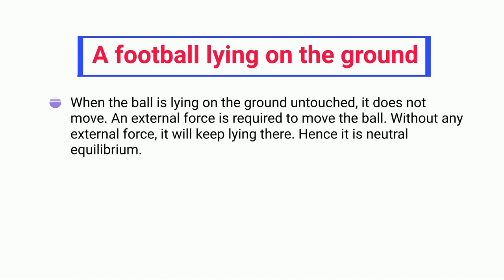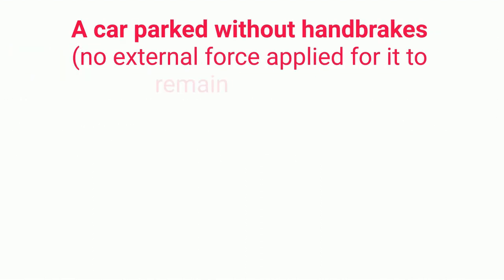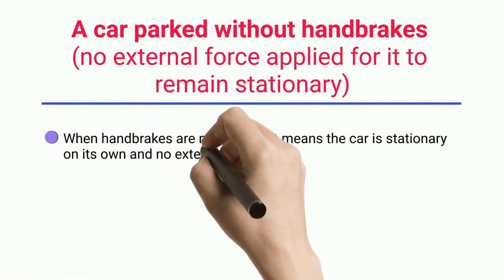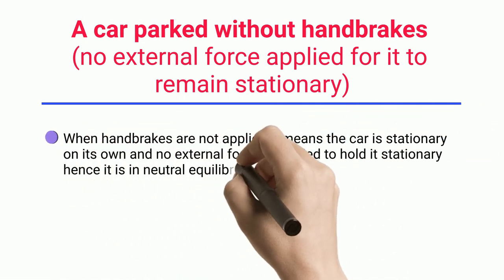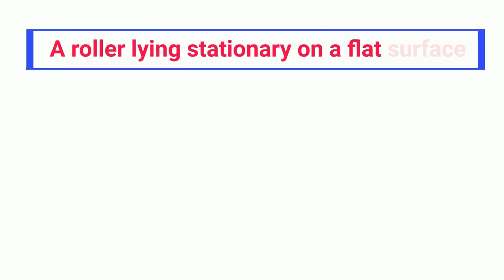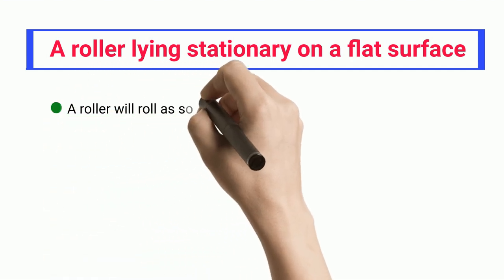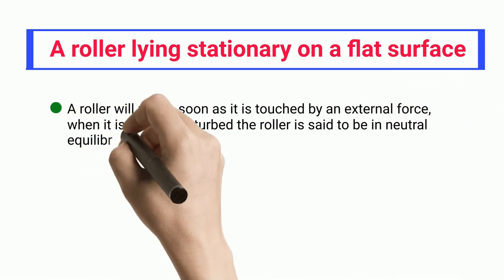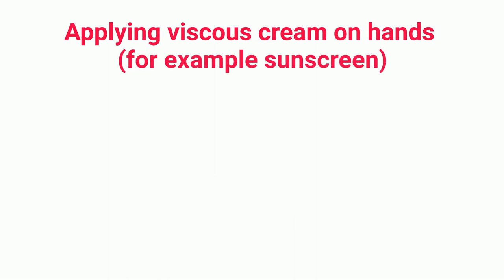Example four: a car parked without hand brakes. No external force is applied for it to remain stationary; the car is stationary on its own, hence it is in neutral equilibrium. Example five: a roller lying stationary on a flat surface. The roller will roll as soon as it is touched by an external force; when undisturbed, it is in neutral equilibrium.